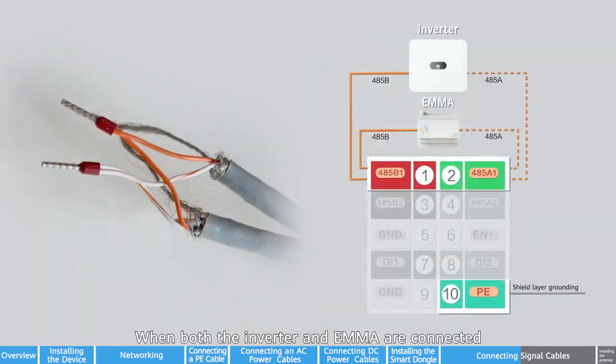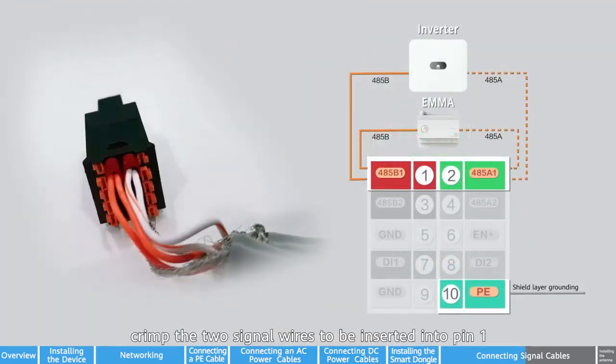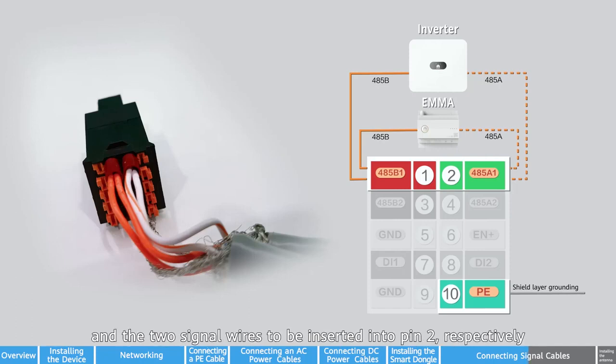When both the inverter and EMMA are connected, crimp the two signal wires to be inserted into pin 1 and the two signal wires to be inserted into pin 2, respectively.